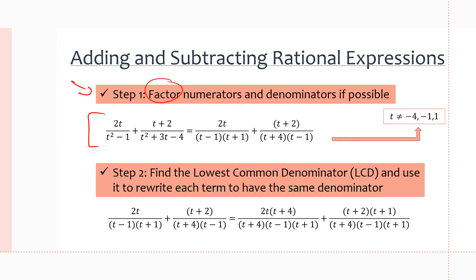Now we want to check for restrictions. We have t minus 1 in the denominator, so t cannot equal 1. We have t plus 1, so t cannot equal negative 1. We also have t plus 4 in the second denominator — if t were negative 4, it would make the whole expression undefined. So t cannot equal negative 4. Those are exactly the three restrictions we note down for later.